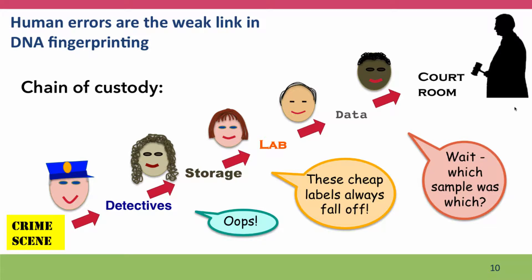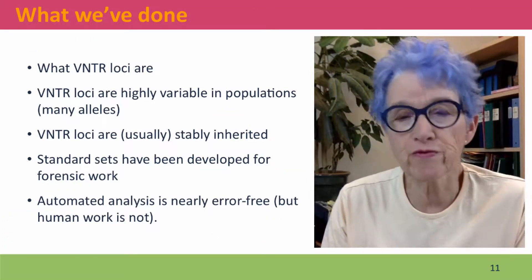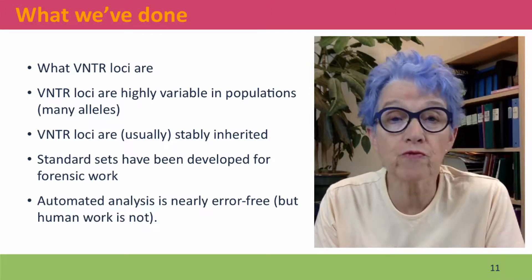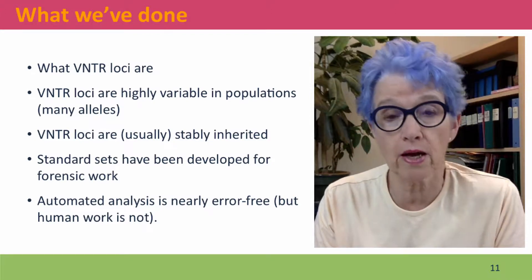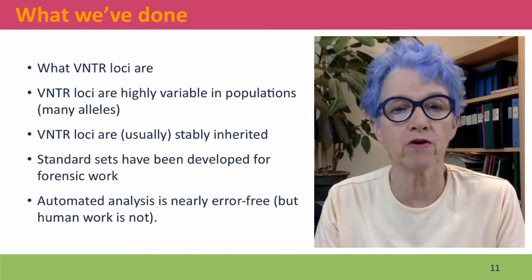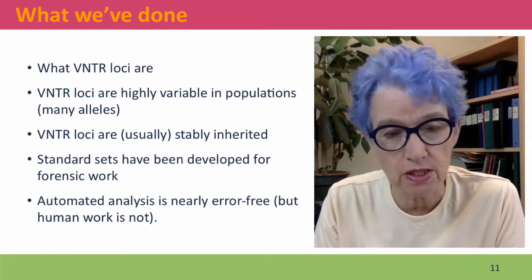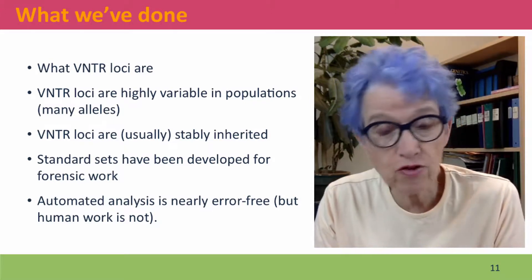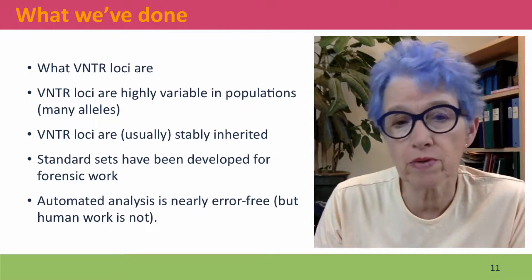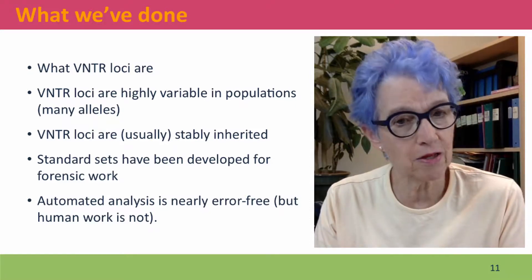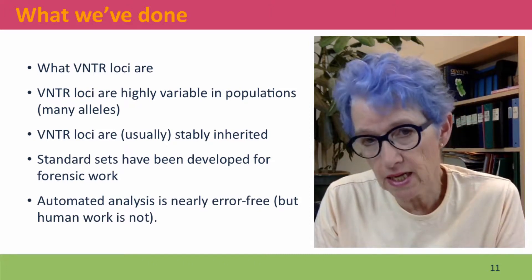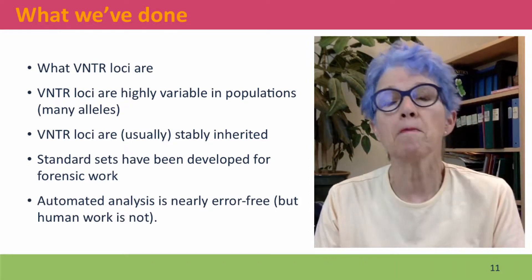We've finished our study of DNA fingerprinting by talking about what VNTR loci are — variable number tandem repeats — why they're highly variable in populations, how they nevertheless have stable inheritance, and the standard sets that have been developed for forensic work. The big concern is not the DNA itself or the automated analysis, but human errors that can creep into the process.